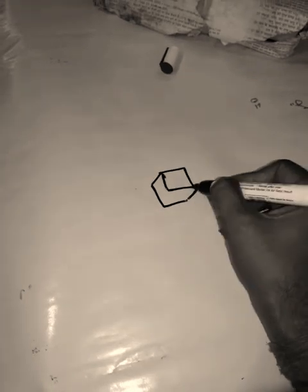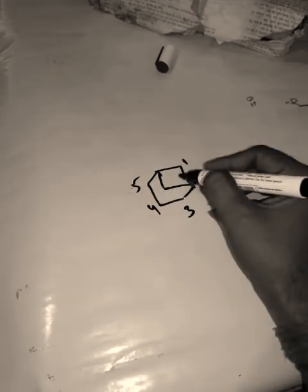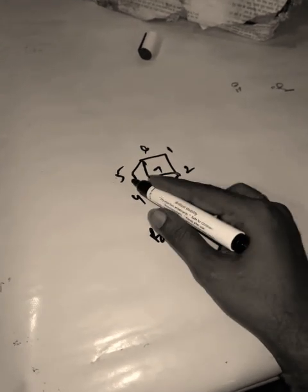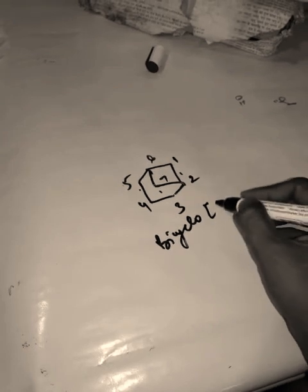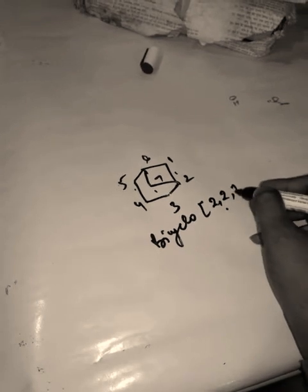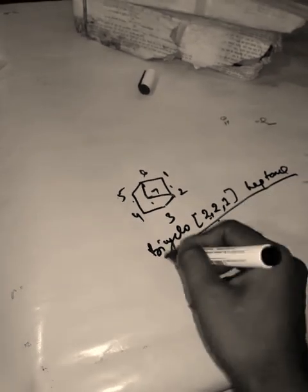Another example: total carbon count is one, two, three, four, five, six, seven. System is bicyclic, so write 'bicyclo'. Bridge carbons in decreasing order: two, two, one. So [2.2.1]. Seven carbons gives 'hept', single bond gives '-ane'. Name: bicyclo[2.2.1]heptane.